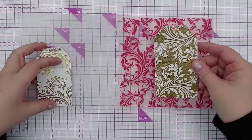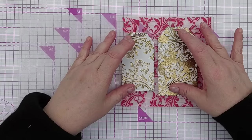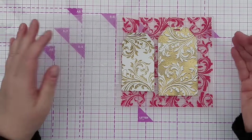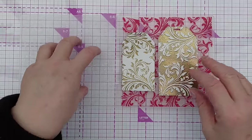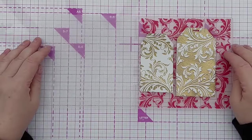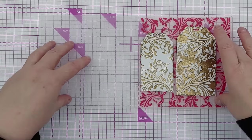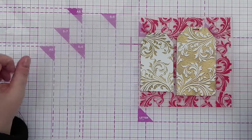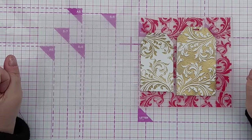So that's the same embossing folder but I inked up different sides. So have a play with your embossing folders, try inking up both sides of the embossing folder and seeing what difference it makes when you heat emboss it.